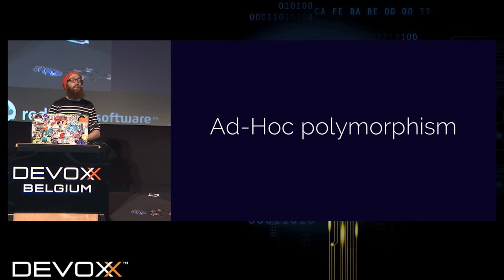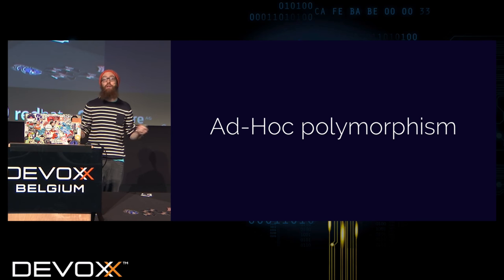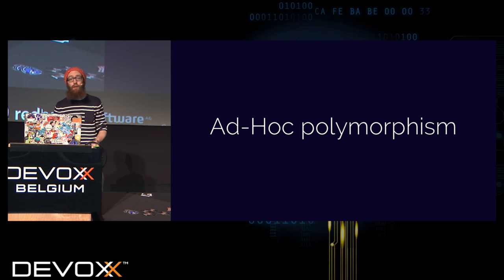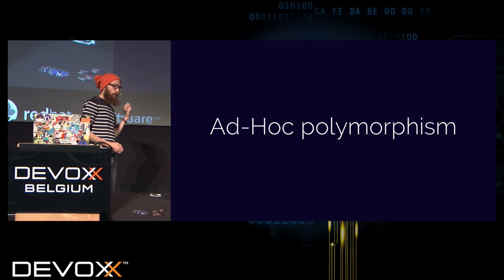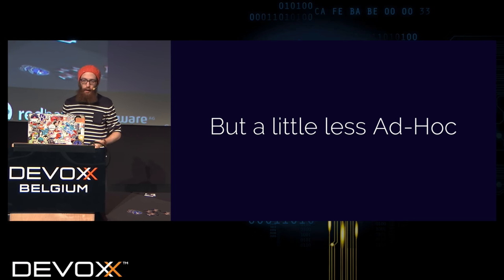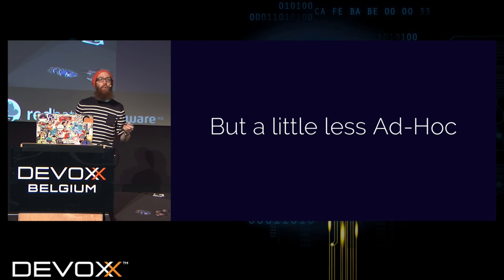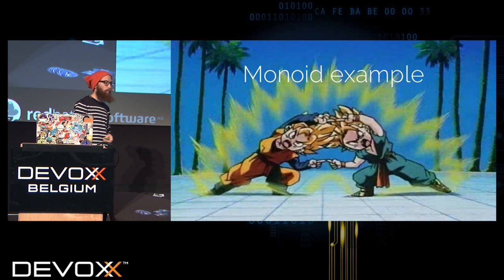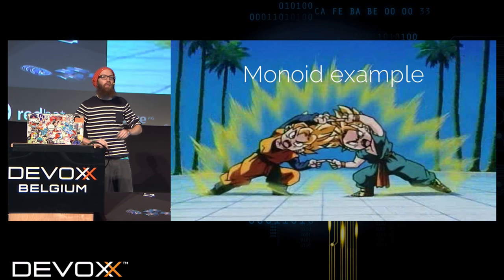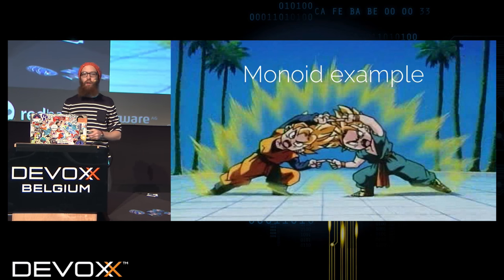Function overloading is nice and really easy to use — you just declare functions with the same name. But it's not structural at all, and that's why it's called ad hoc polymorphism. In Haskell they wanted that but with more structure, and they came up with type classes, which are really interesting in Haskell and are really used in Scala — but a few years ago, everybody was using type classes without saying 'type classes,' which made it hard to understand. I will show you a simple example with a monoid.